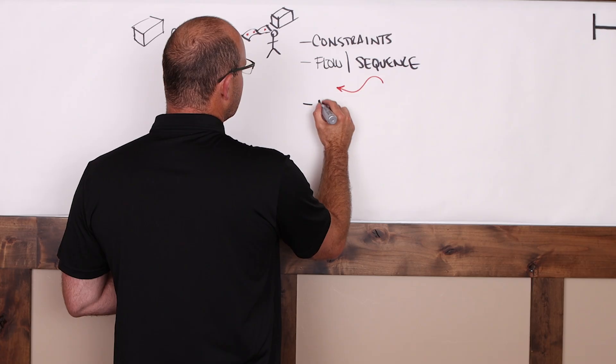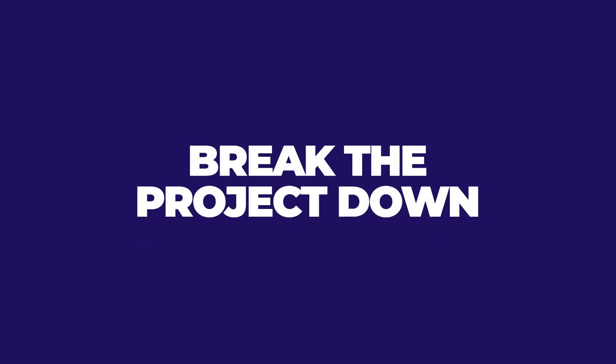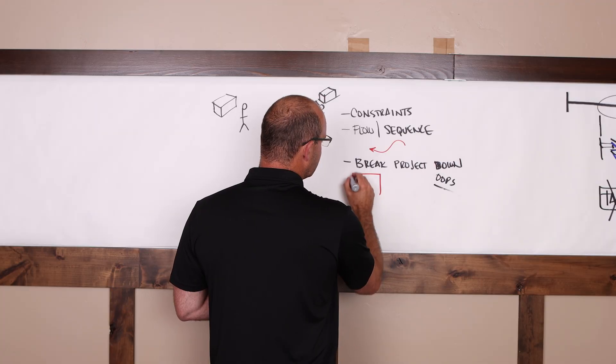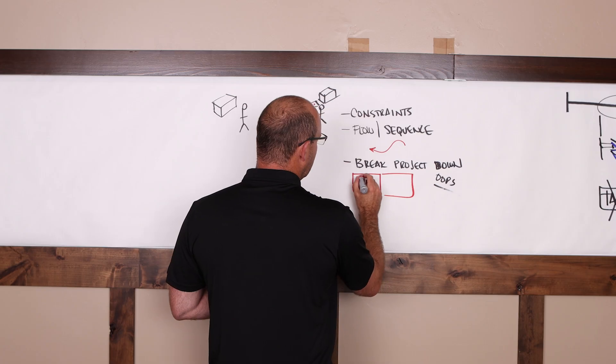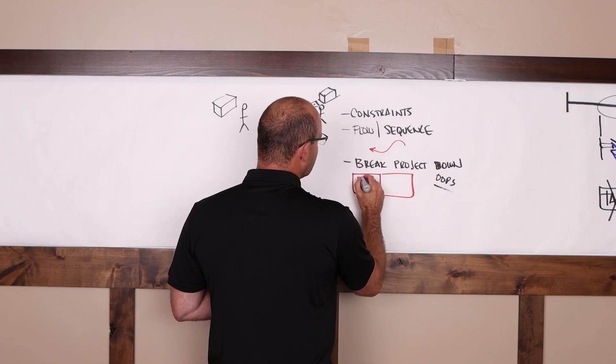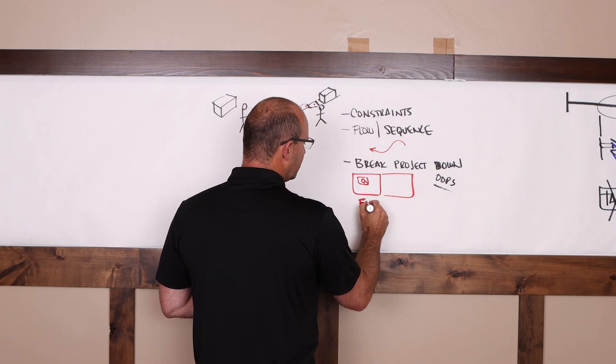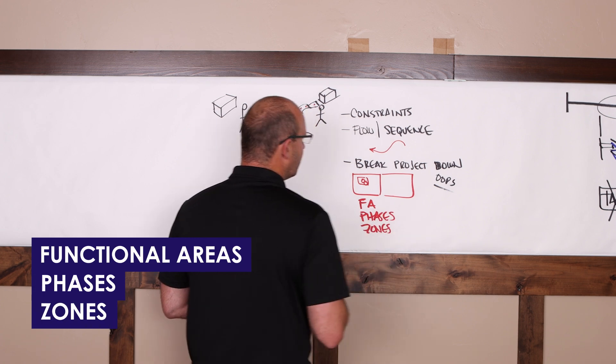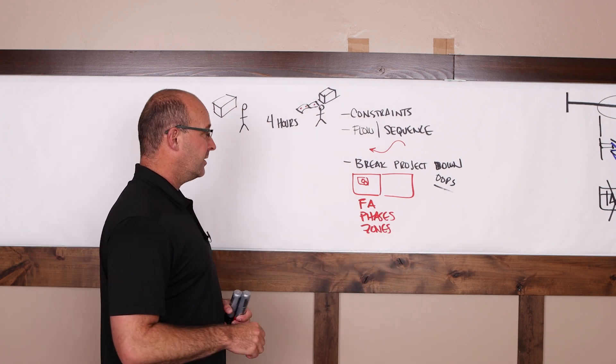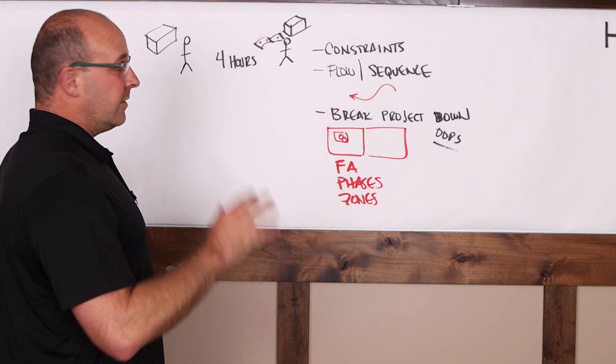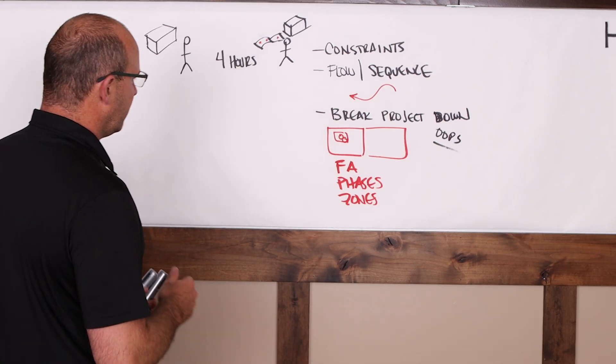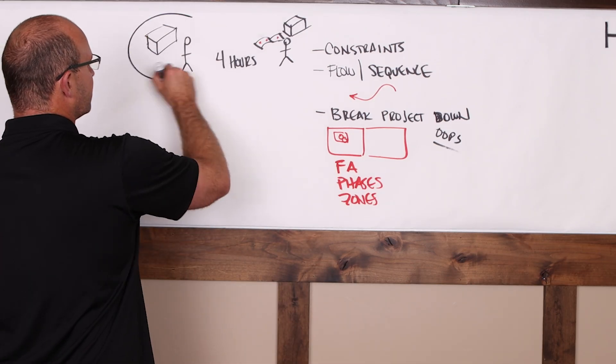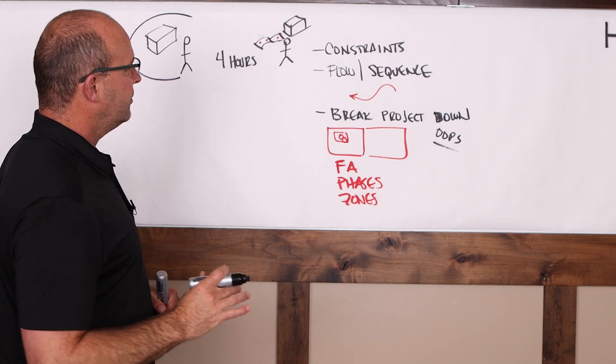Then the third thing is you're going to start to break the project down. So what are your functional areas on the site? What are your phases? What are the zones within it? So I'm just going to do functional areas, phases, zones. Because what you want to do is start to organize the project that way. If it's a lot of drawings in a massive project or super complex, this is going to be your first approach. You're not going to go too in depth.